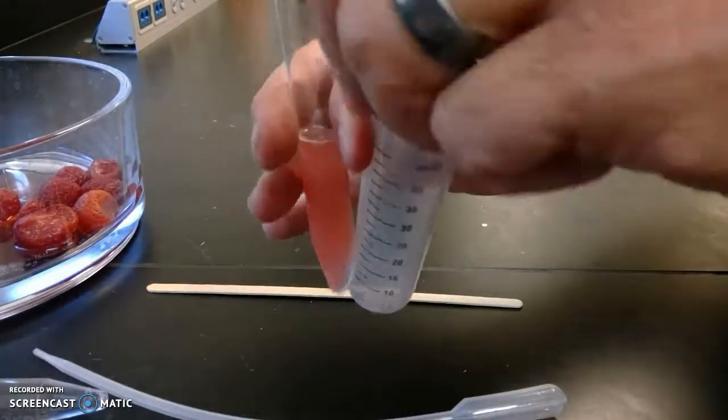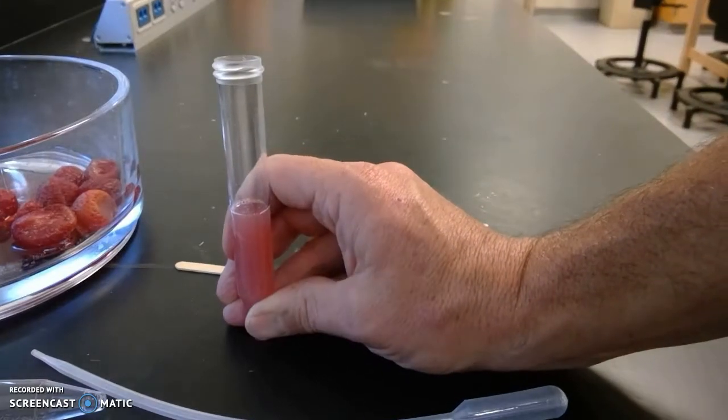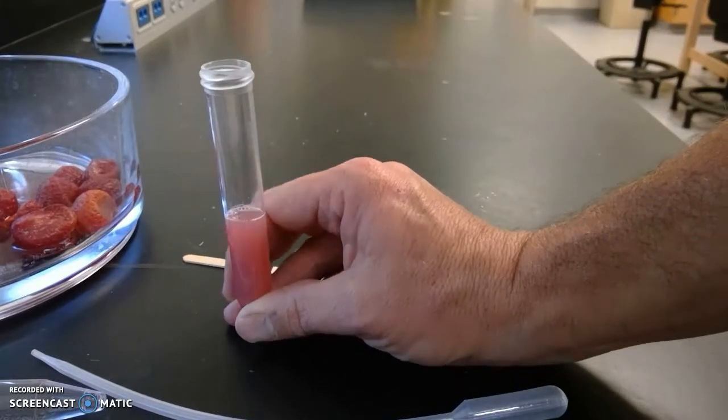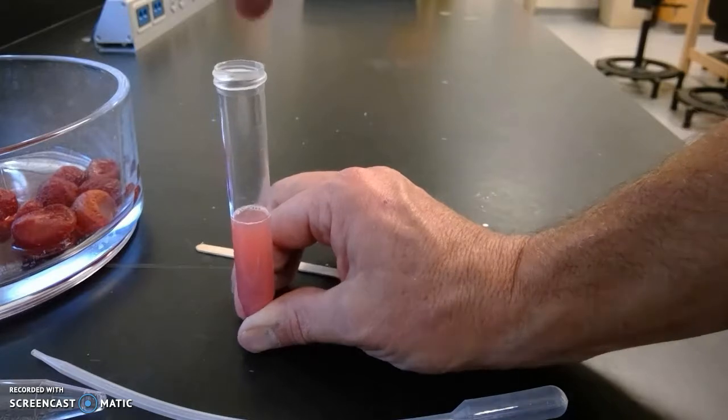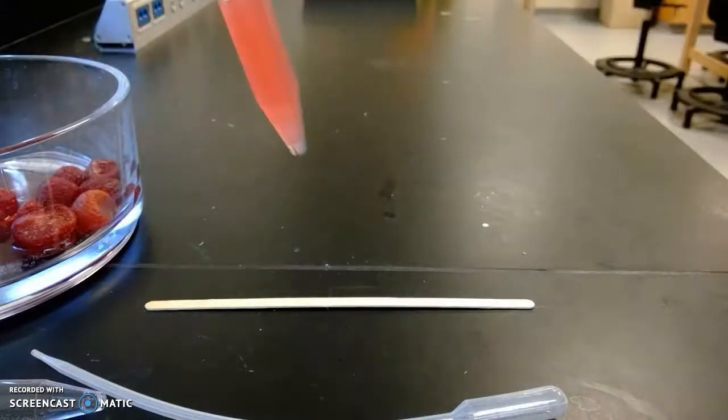You are then going to acquire five milliliters of either isopropyl alcohol or ethanol and pour that in. Close it and shake it around.